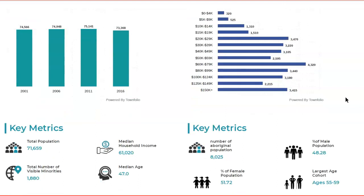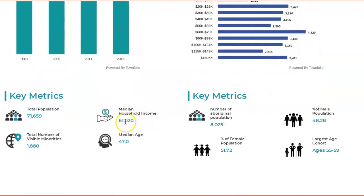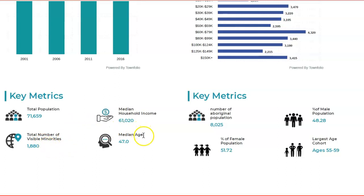The key metrics we can check are: the median household income of $61,000, the number of Aboriginal people living in the community at around 8,025, the majority of the population is female, and the age cohort is around 55 to 59 — basically a lot of elderly population. The number of visible minorities is only 1,880, and the median average age for the whole city is 47, which is a little older than other communities we've seen before.